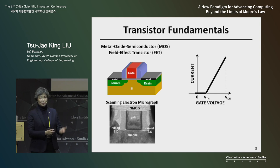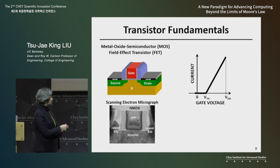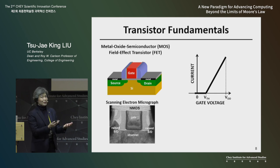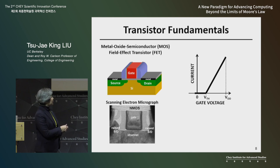The gate electrode is electrically insulated from the semiconductor surface by a thin oxide layer — in the past, this was silicon dioxide. So the gate is metallic, which is why we call it a metal oxide semiconductor device. When you put a voltage on the gate relative to the source, that induces an electric field, and that causes the transistor to turn on if the gate voltage is higher than some threshold.